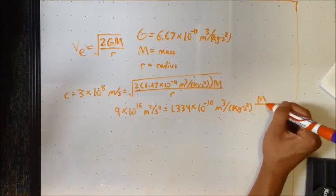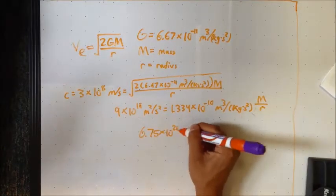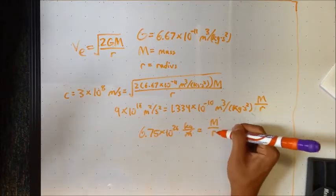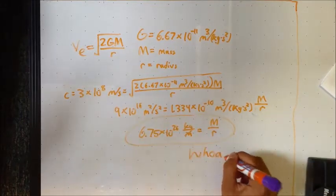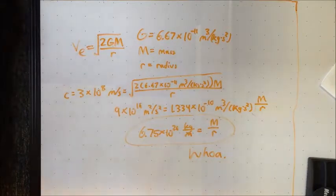If we set escape velocity equal to the speed of light, we will know at what threshold an object's gravitational pull becomes inescapable. The proportion of the mass to the radius of the object comes out to be 6.75 times 10 to the 26th kilograms per meter. Whoa.